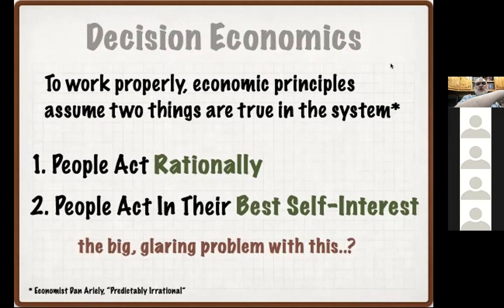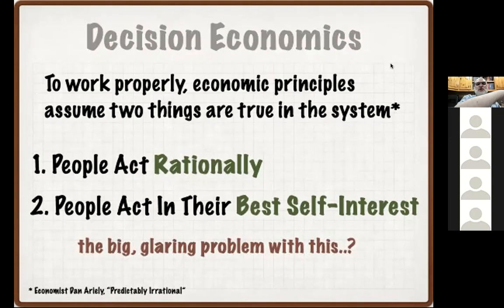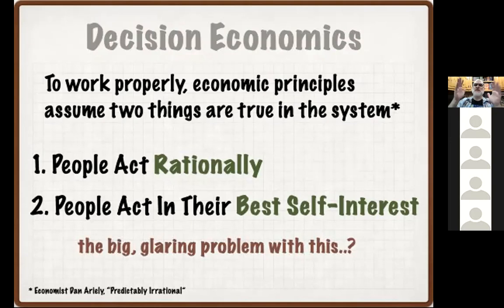That sounds great when we're looking at an enormous sample size of billions of people on planet Earth, or even just hundreds of millions of people in North America. You're going to have outliers — people that are not acting rationally and are not acting in their best self-interest — but we know there's a large enough number who are that we can start to make some calculated, informed choices.